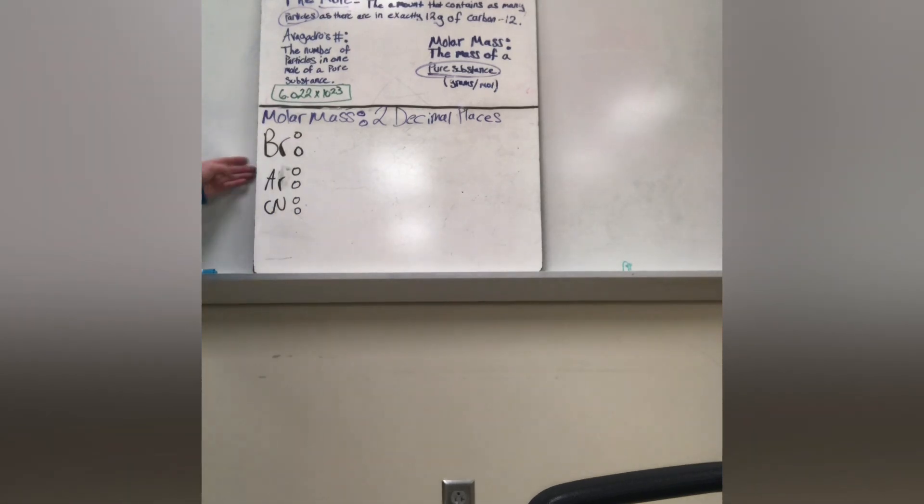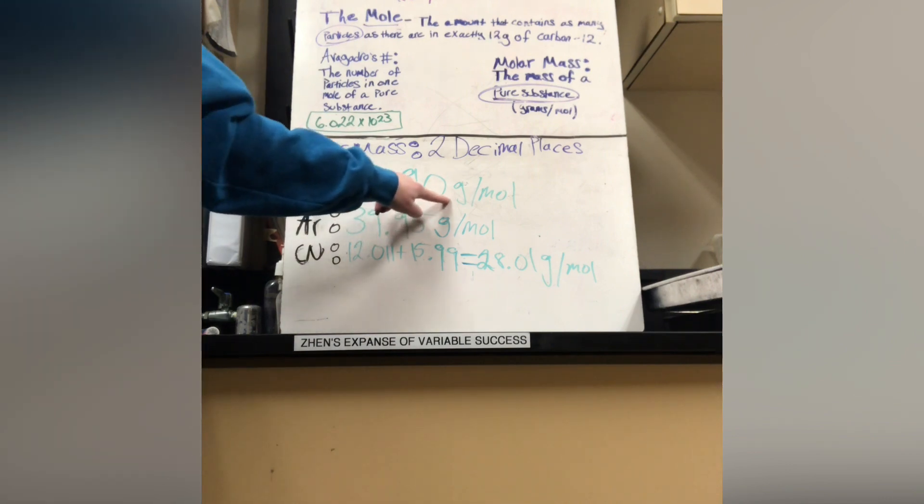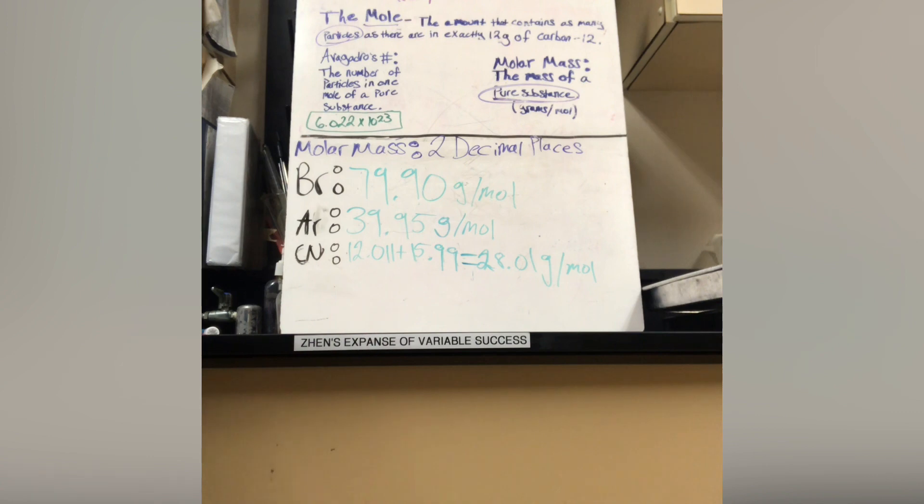Now, I want you to try. Pause this video. Try it on your own. It says 79.904. You would carry the decimal two places. We should get 79.90. And don't forget your units, grams per mole.